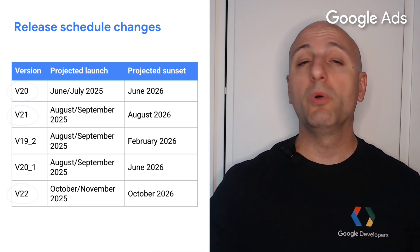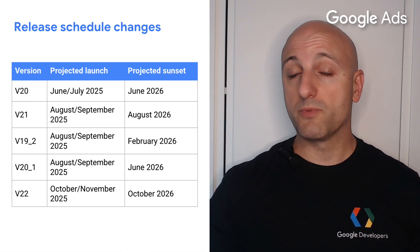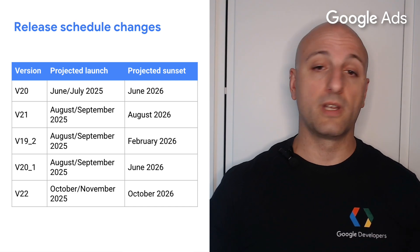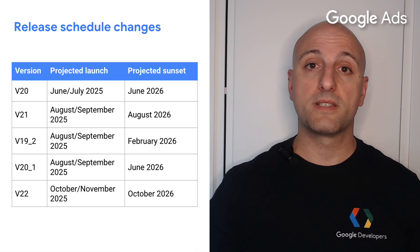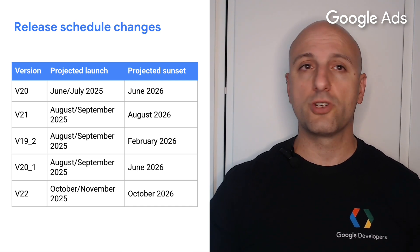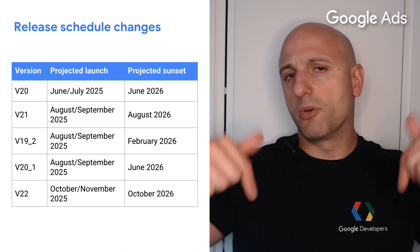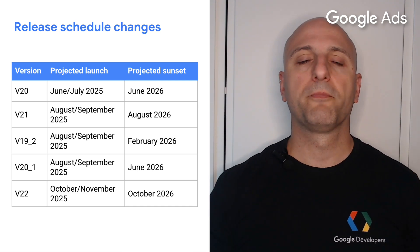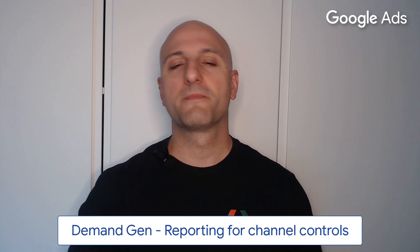I will leave you a link to the announcement with all the details, including the expected sunset date of each version, in the video description right below. Now let's get started with some new features in the Demand Gen space. The first one I want to talk about is reporting for channel controls.